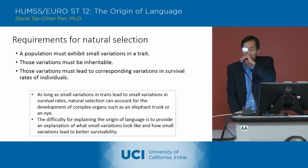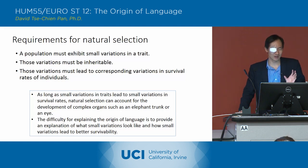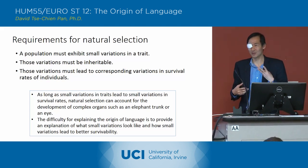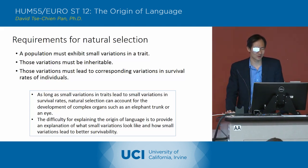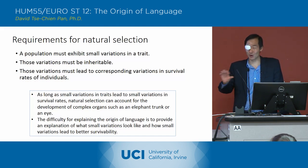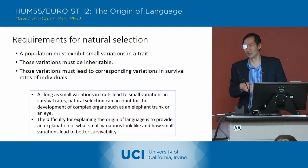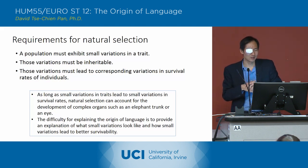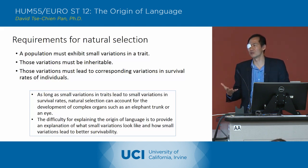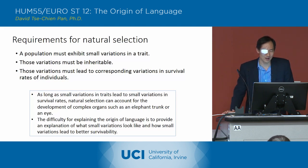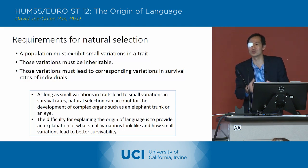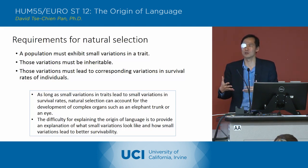The way natural selection works, for it to function, you need three prerequisites. A population has to exhibit small variations in a trait — like different color eyes. Those variations have to be inheritable, passed on from generation to the next. And those small variations must also lead to corresponding variations in the survival rates of individuals in that population. You need all three things for natural selection to occur.